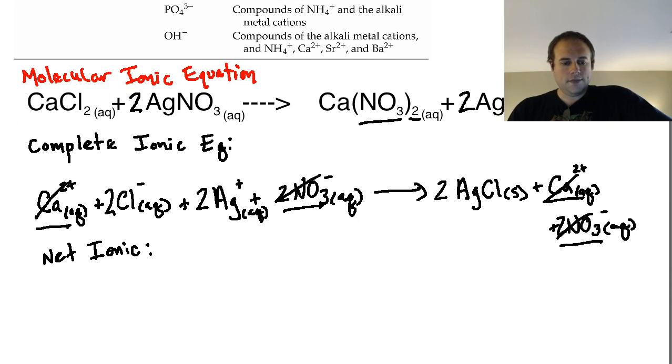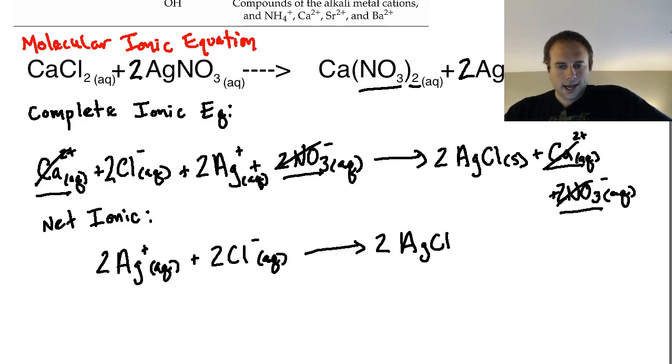For the net ionic equation I'm now going to take, I personally write the cations first. So I say it's going to be two Ag+ plus two Cl- aqueous is going to give me my solid which would be two AgCl solid. This would be a precipitate reaction because I'm creating a solid compound from aqueous. Now this is already balanced and it should be balanced if you did the initial balancing. You have two silver ions, two chloride ions in order to create two silver chloride molecules. So there you go. That is an example of molecular ionic equations, complete ionic equations and net ionic equations.